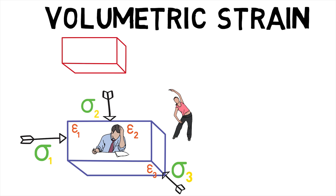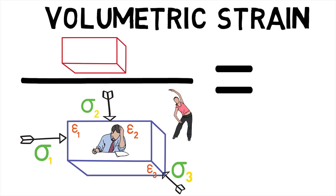Volumetric strain then is defined as the increased volume of the rectangular solid upon the original volume of the solid and is denoted by theta.